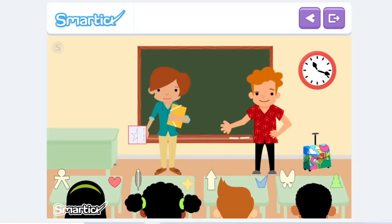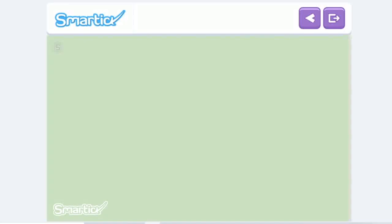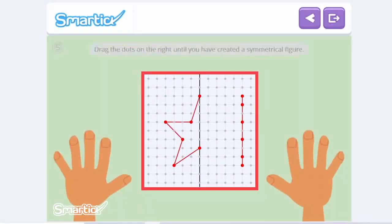To end the class, Berta passed out a geoplane with something drawn on it, so that they can create a symmetrical figure and practice what they have learned. Can you help Leo create his? Drag the dots on the right until you have created a symmetrical figure.